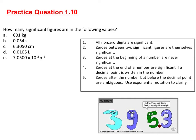Alright, so the first one is 601 kilograms. With 601 kilograms, that is three significant figures. The zero is held captive by the six and the one, so that zero counts because that follows rule number two.